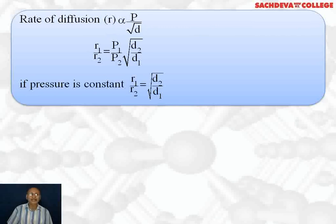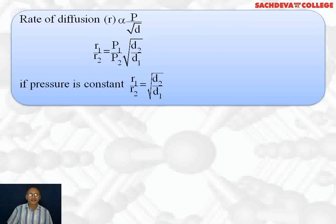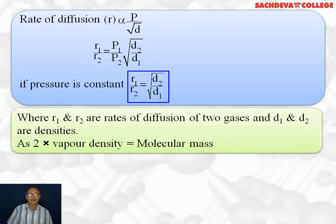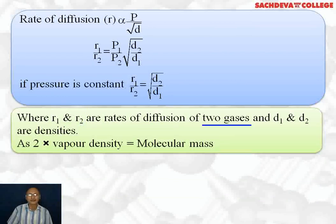If there are two gases, R1 over R2 will be equal to P1 over P2 into square root of D2 over D1. If pressure is constant, then the formula will be reduced to R1 over R2 is equal to square root of M2 over M1, where M1 and M2 are molecular masses of the two gases.